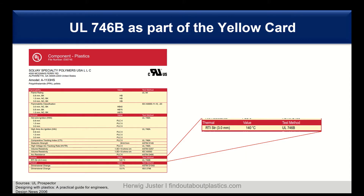The UL 746B is also part of the yellow card. Here you can see an example of a yellow card for a 33% reinforced PPA. When you look under the section 'Thermal,' you can see the RTI for strength at three millimeters. For strength, the value is 140°C. This is really the value where you know: at 140°C, after 100,000 hours, the material still retains 50% of the property. The test method referenced is 746B.